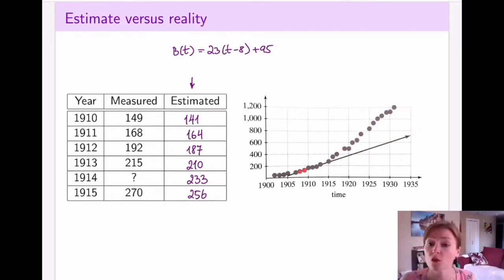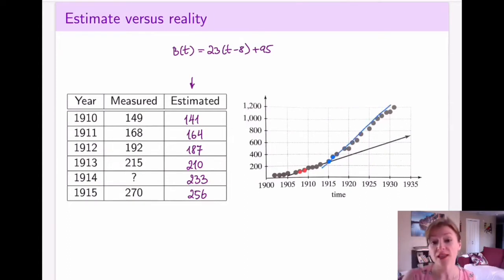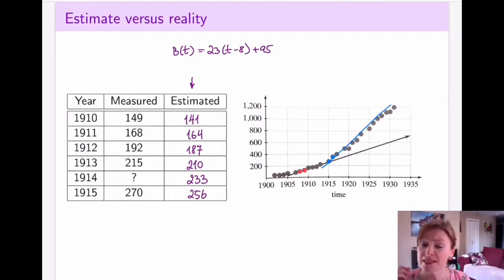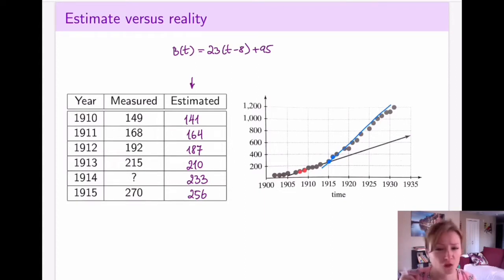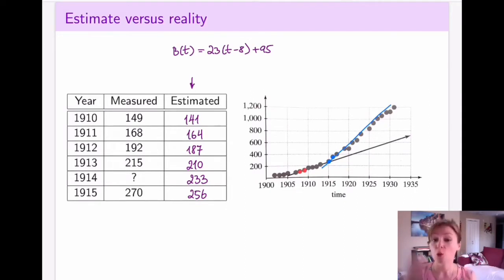For years that are further away from 1915, I could recompute a new line at future points — for example using 1915 and 1916 to compute a new line that will model the next 15–20 years much better. That is the key with linear approximation: an approximation is going to do a very good job near the point where you've picked it, but the further we move away from those years, the worse our model becomes.